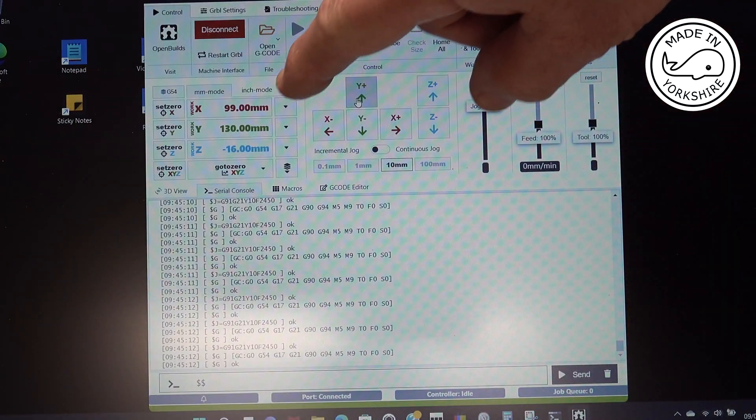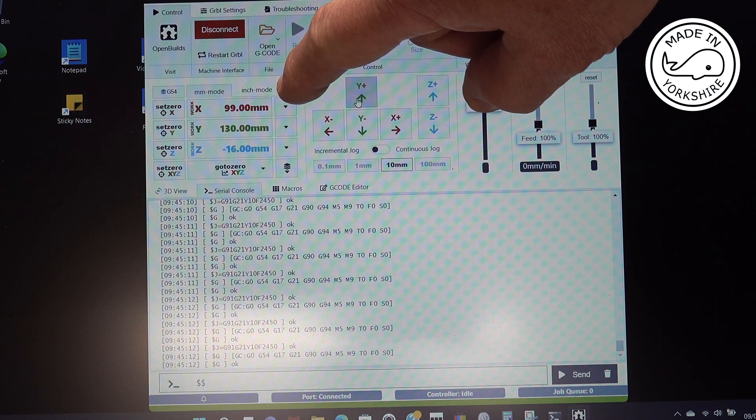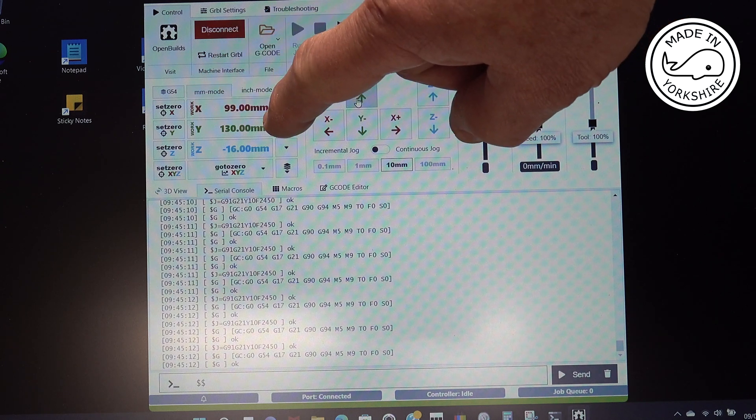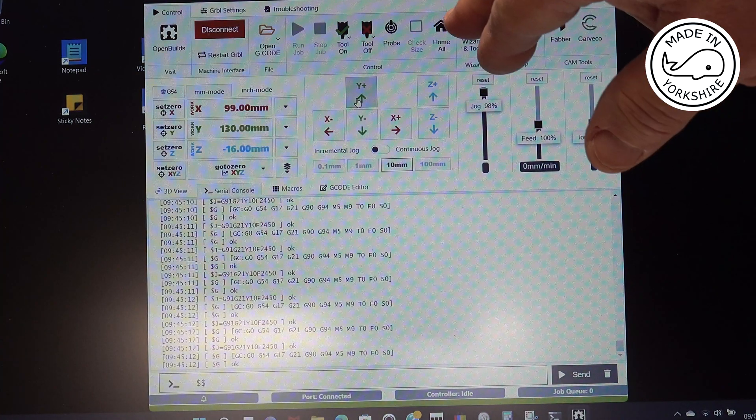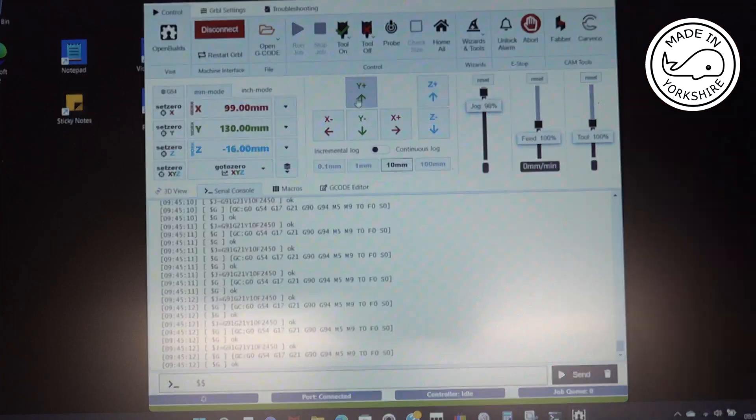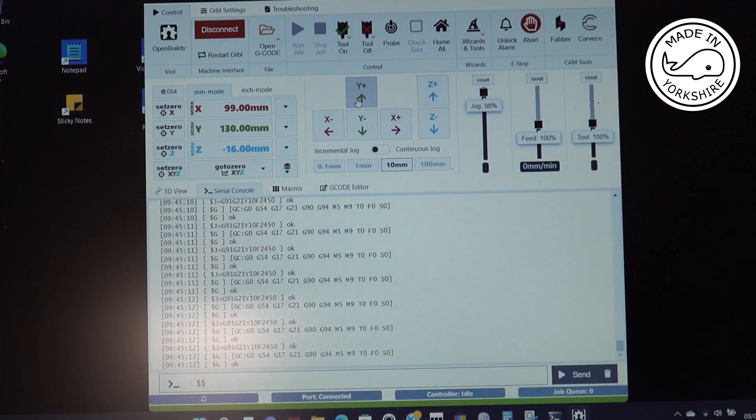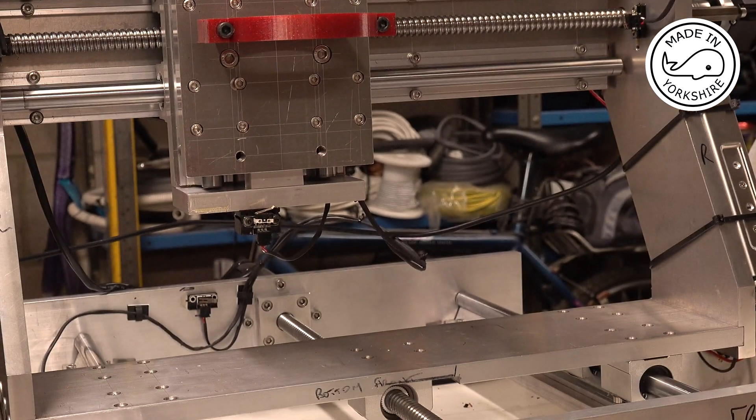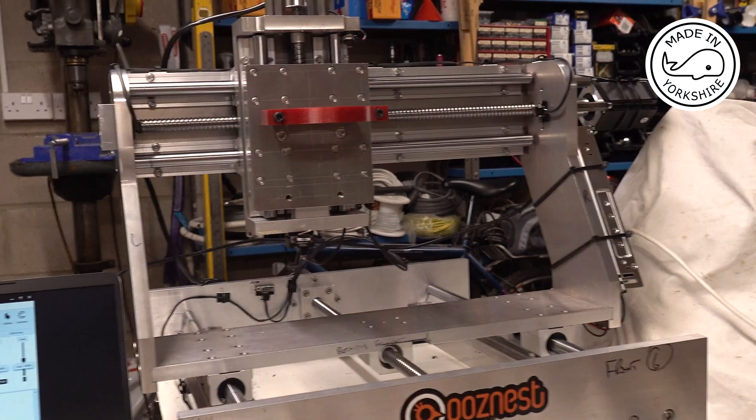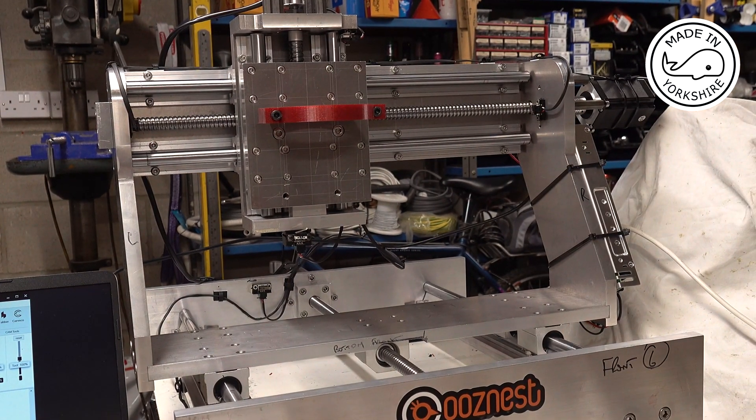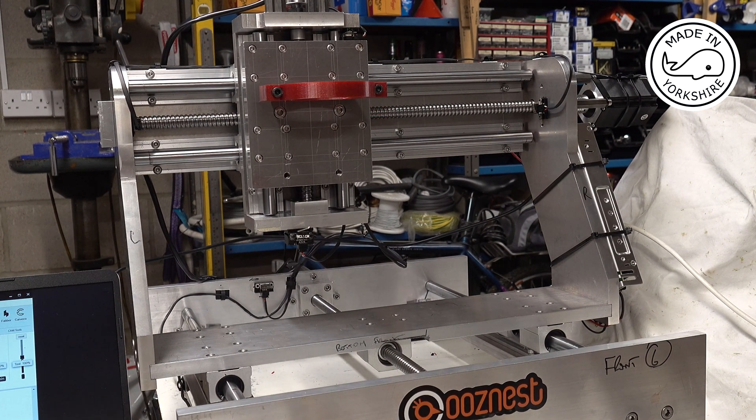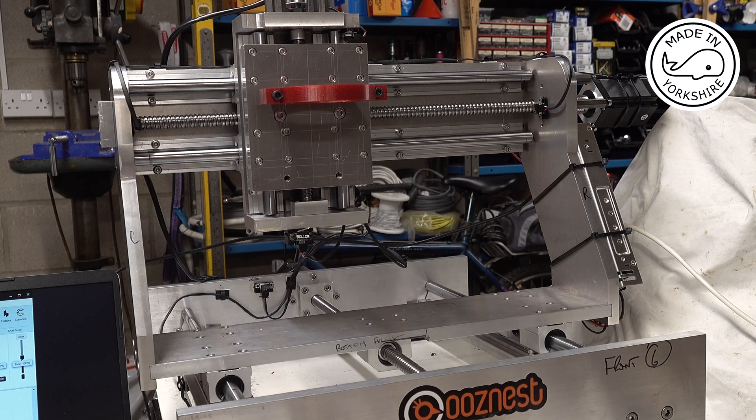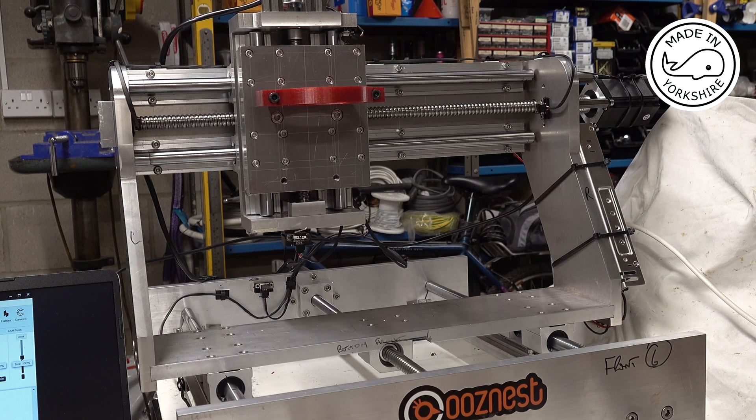So currently here, we've got the X axis at 99 millimeters, Y at 130, and Z at minus 16. So if I click on home all, it'll home it down to a zero point.